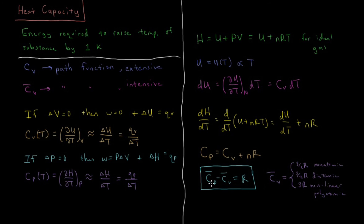So although these may be different processes and path functions with different derivatives defining them, the difference between the constant pressure heat capacity and the constant volume heat capacity is just NR, and for their molar cases it's just the gas constant R.